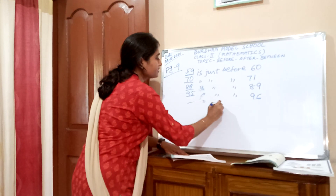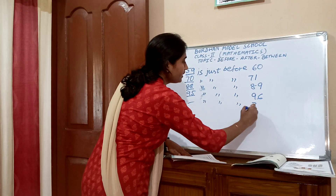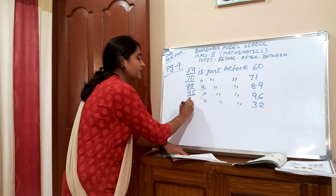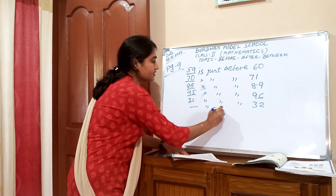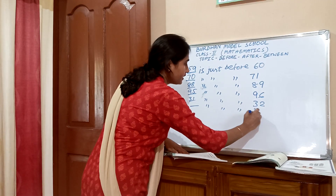Dash is just before 32 — so 32's before number is 31. Dash is just before 41.